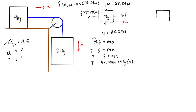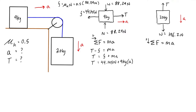Now let's draw the free body diagram for the 20 kilogram mass. We have its weight pulling down and tension pulling up. Weight equals mg: 20 kilograms times 9.81 is 196.2 newtons, with acceleration going downward as positive. Applying Newton's second law, sum of forces equals ma, so weight minus tension equals ma. Isolating for tension gives T equals w minus ma, which is 196.2 newtons minus 20 kilograms times a.